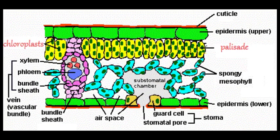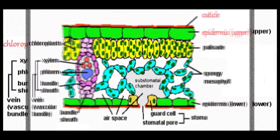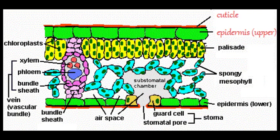Most of the cells in a leaf contain chloroplasts, but they are mostly concentrated in the palisade cells. These are on the upper side of the leaf, gaining the most sunlight. There are however two layers above the palisade cells: the upper epidermis and the waxy cuticle. These are designed to help limit water loss and protect the leaves from disease and insect attack.